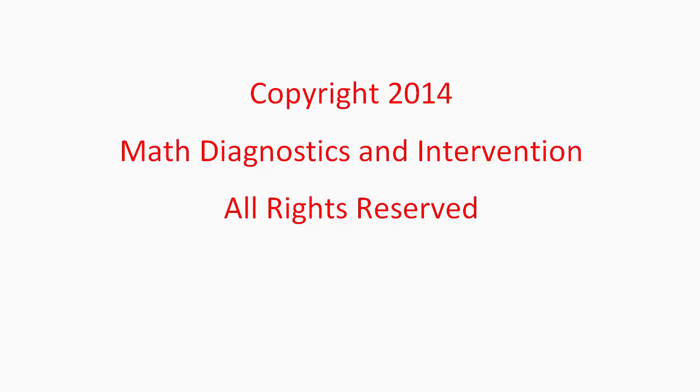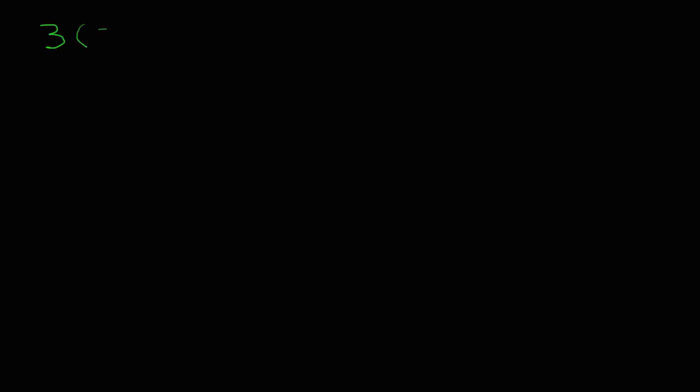We're going to take a look at the distributive property. The distributive property looks like this: when we have three times a quantity — in this case, three times the quantity of 2x plus 1 — we have a set of parentheses and then a variable or number outside of the parentheses. So what this means is that we have three times the quantity of 2x plus 1.